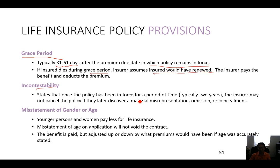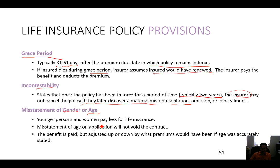Incontestability: you cannot contest the policy once it has been enforced for more than two years. The insurer cannot cancel the policy if they later discover a material misrepresentation. So basically they have two years to find anything you said incorrectly. Misstatement of gender or age: young people and females pay less for life insurance because they live longer.